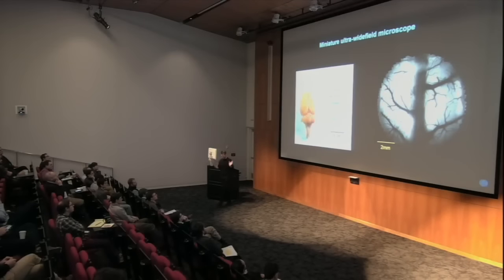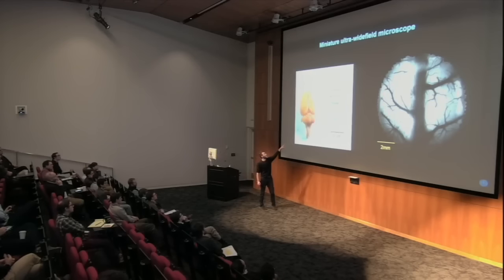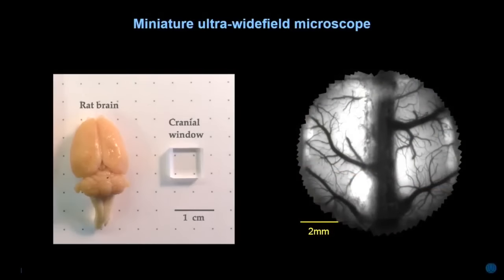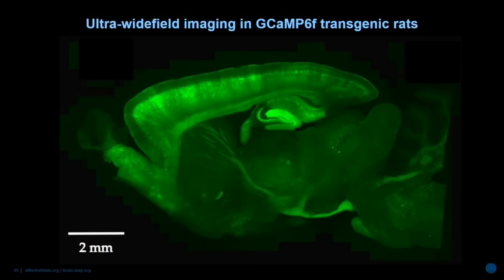To give you a sense of the field-of-view size compared to the rat brain: on the left is a perfused rat brain, in the middle is the cranial window size we typically implant, and on the far right is the scale of the entire field of view. Previously we had been doing AAV injections to label cortical neurons with GCaMP, because no transgenic rat lines were available. In collaboration with Janelia Farms, we've been developing and characterizing new strains of transgenic rats that express GCaMP in cortical neurons and other brain regions, and here you can see widespread GCaMP expression throughout the cortex.